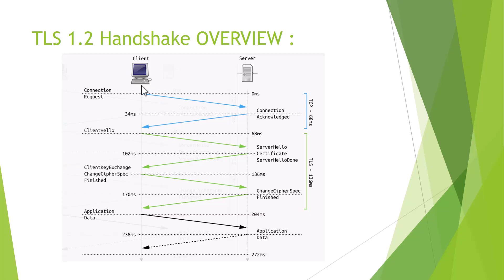After the Client Hello, the server sends the Server Hello. In the Server Hello, the server selects from the options the client provided. The server picks the highest common TLS version that both support. For example, if the server supports up to TLS 1.3 but the client only supports up to TLS 1.2, then TLS 1.2 is selected because that is the highest version common to both.